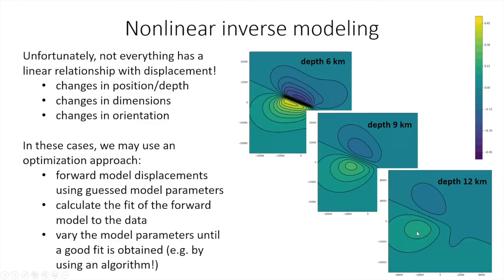Burying the source even deeper makes this even more pronounced: displacements are smaller again, the peak displacement is further from the fault, and the pattern becomes more simplified. You don't see the wings and bumps visible in the shallower model — basically because the elastic crust acts like a low-pass filter and fine details are smoothed out the deeper you bury something.